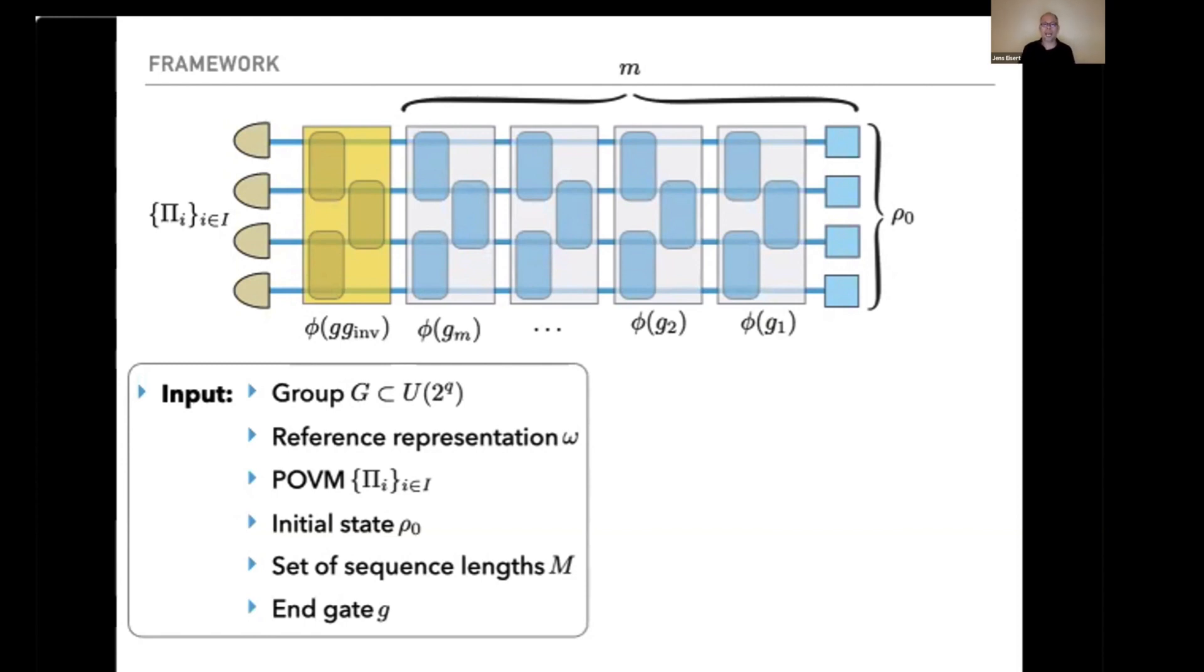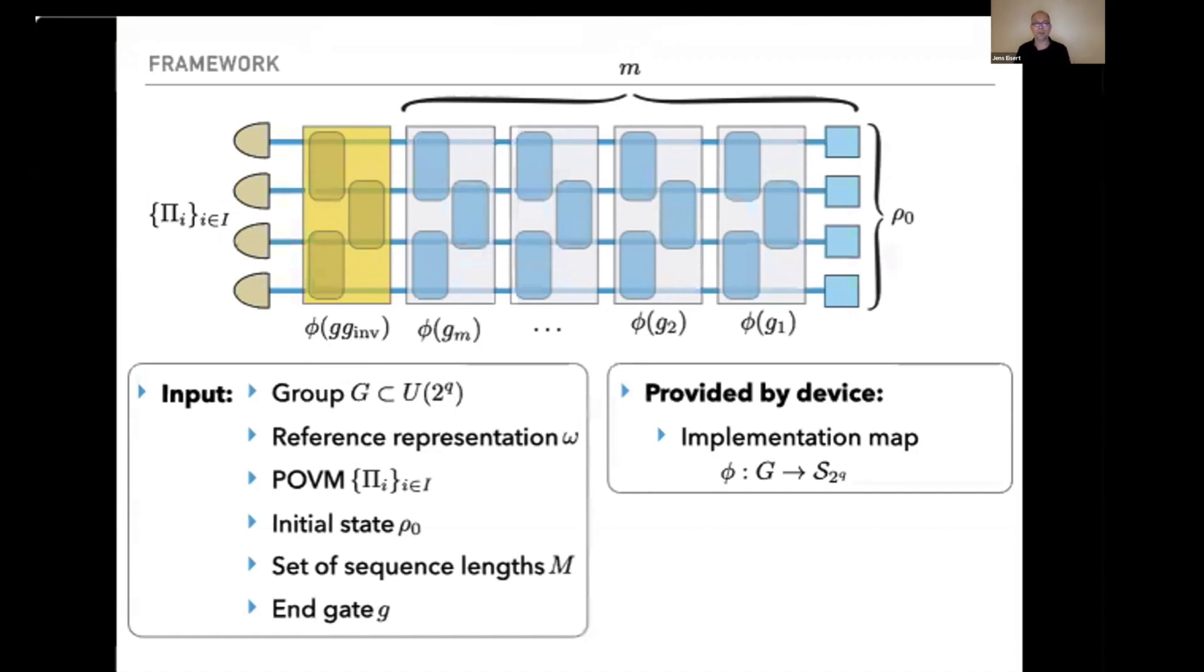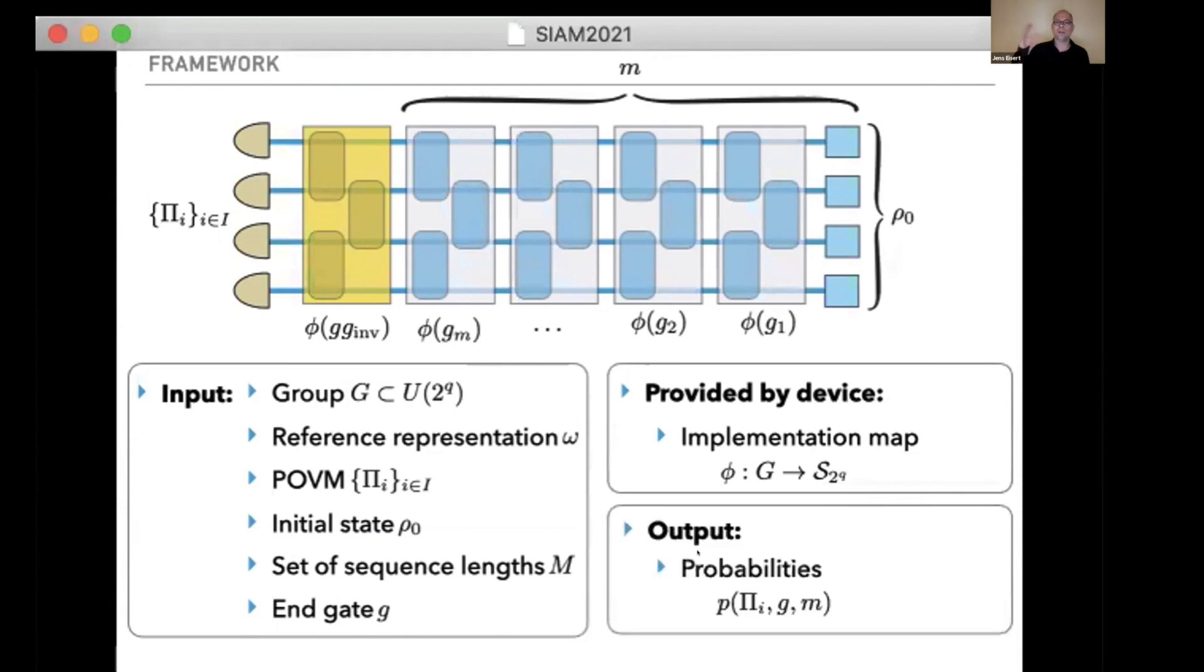The key thing provided by the actual quantum computer is the implementation map. You can tell the quantum computer to implement some circuit and this will be done but not quite perfectly. This imperfectness is modeled by the implementation map. It models some map from the group element to some quantum channels or to a completely positive superoperator. That's what we want to study. The data we have at the end are the outputs: a list of probabilities associated with each measurement outcome, sequence length, and group element.